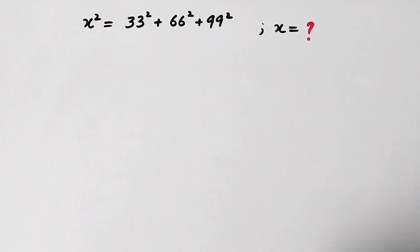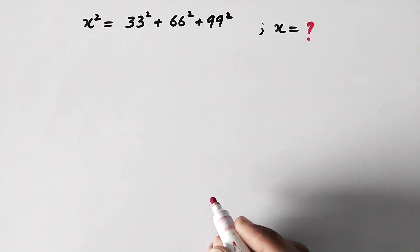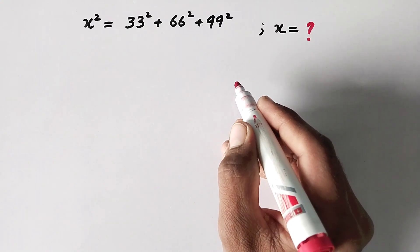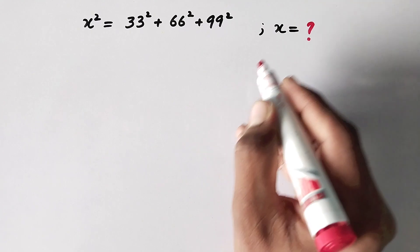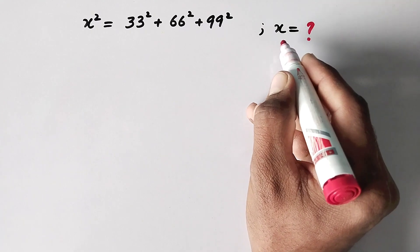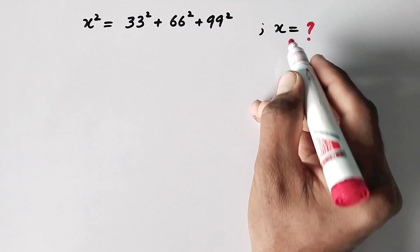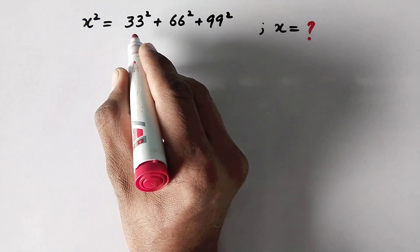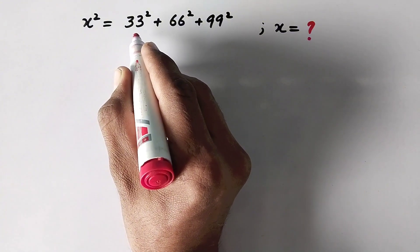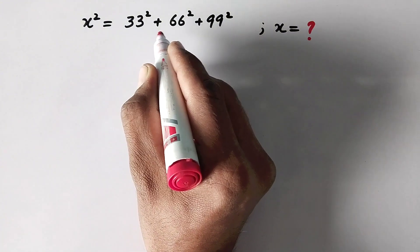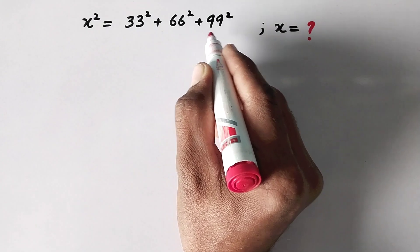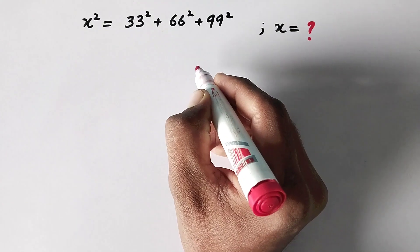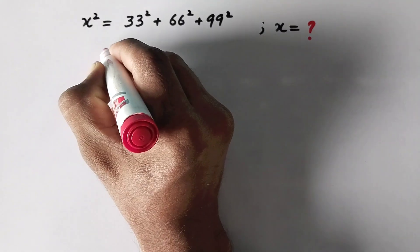Hi everyone, welcome to Explored Maths. Today the problem we have to solve is: what is the value of x if x squared is equal to 33 squared plus 66 squared plus 99 squared? So let us see the solution.